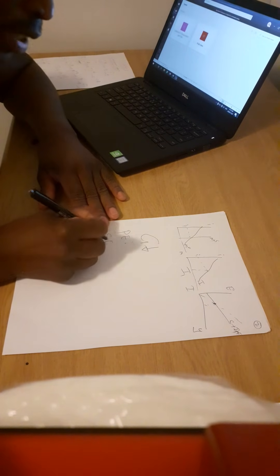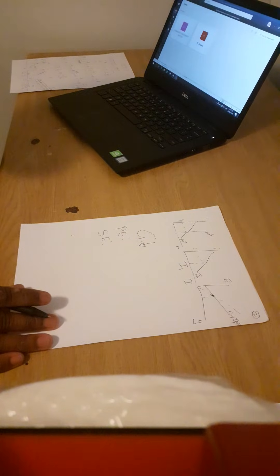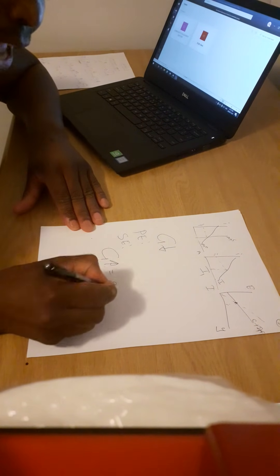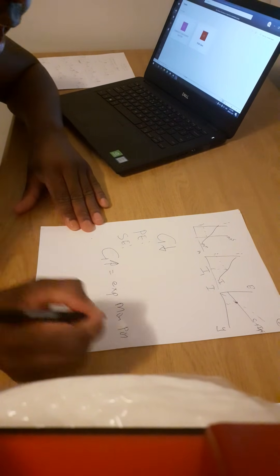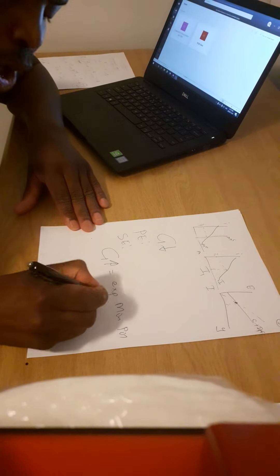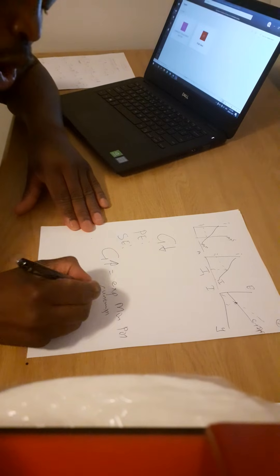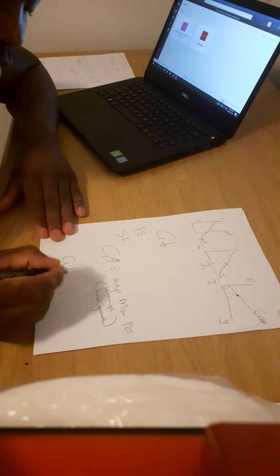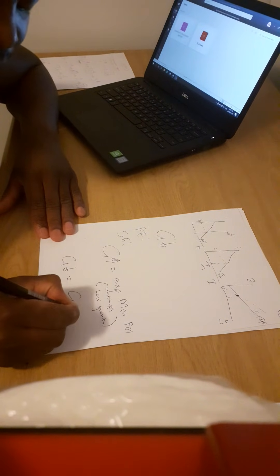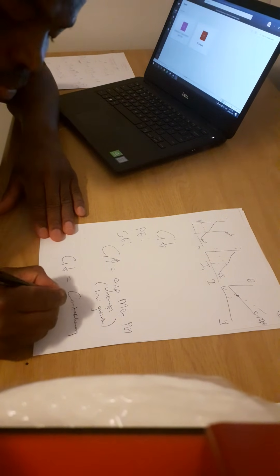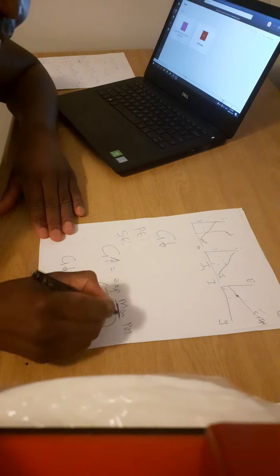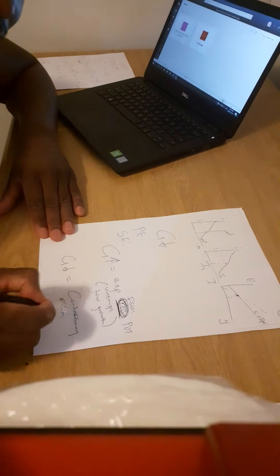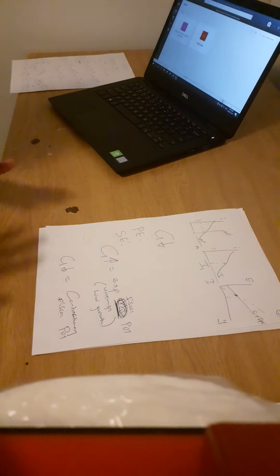The point to remember: when government expenditure increases it is called expansionary fiscal policy, and it is used to solve unemployment or low growth. When government expenditure decreases, it is contractionary fiscal policy — note that it's fiscal, not monetary; monetary has to do with money.